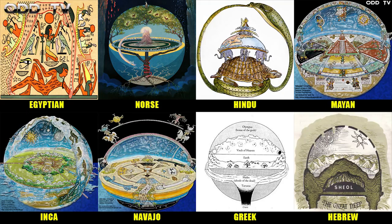Here is a few of the cosmologies of the ancients. The people of today have been taught that many of these ancient cultures were primitive and stupid. The fact is they were more in touch with reality back then. We are completely out of touch with reality, and it's by design.